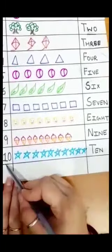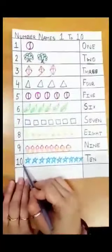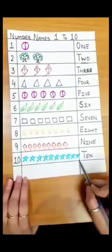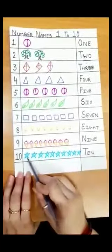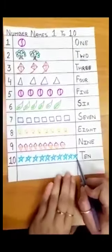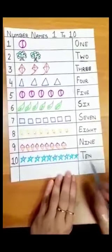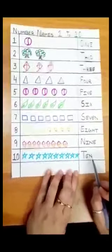And last one, ten. Ten is numeral. Count the stars: one, two, three, four, five, six, seven, eight, nine, ten. Ten stars. The number name is T-E-N, ten.